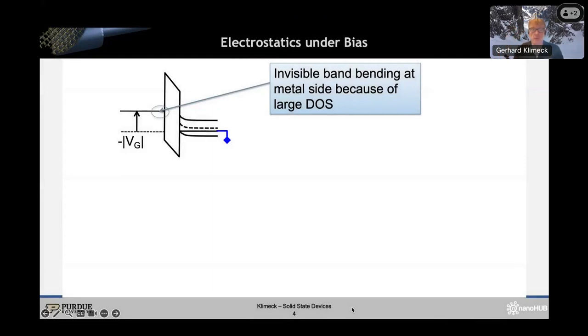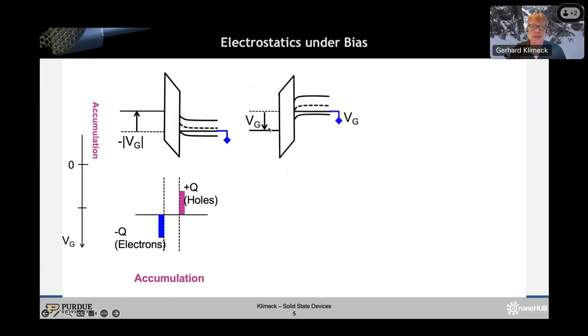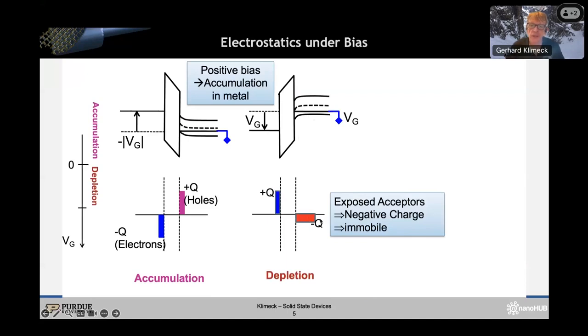Here's a P-type MOS capacitor under bias. You can play through it. We can determine where the electrons and holes are sitting. Here you're in accumulation mode where there's a bunch of holes piled up. You have electrons on the metal side, but there's no band bending because there's so many carriers that the bands don't even bend. There's no screening. We call that accumulation. As you bias in the other direction, you start to pull the bands down here in the semiconductor. You start to build a depletion region where you're exposing the negative charge, in this case, for the P-type device.